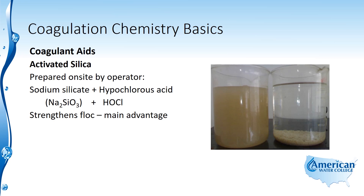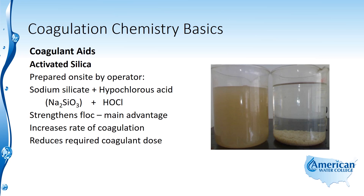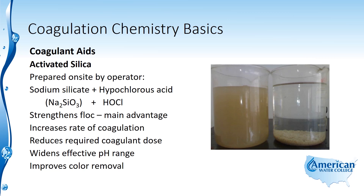Any floc that carries over the sedimentation basin and gets filtered will also stay together and be easily filtered out. Activated silica also increases the rate of coagulation and reduces the required coagulant dose, as well as widening the effective pH range of the coagulant. For example, aluminum sulfate has a limited pH range in which it works, so activated silica can increase that range.